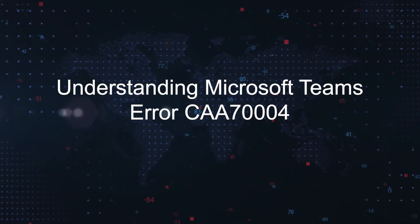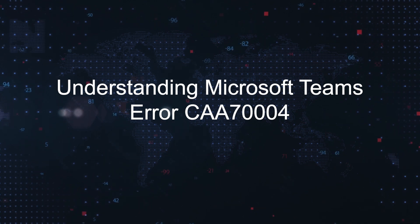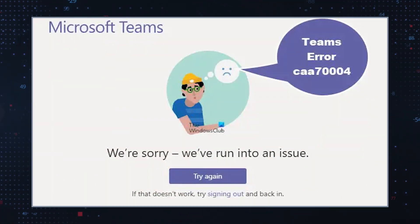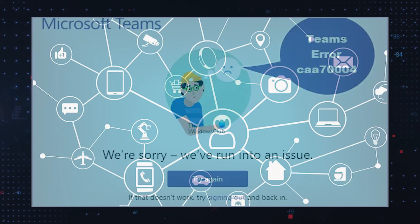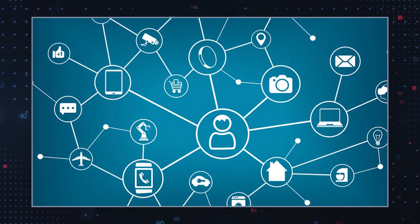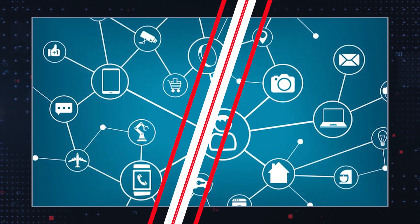The Microsoft Teams Error CAA-70004 typically occurs when there are problems with the network connection or when cache files within the Teams application have become overloaded. This error code acts as a signal that the normal communication and collaboration process is disrupted. Resolving this error is crucial to restore smooth operation and ensure uninterrupted productivity.